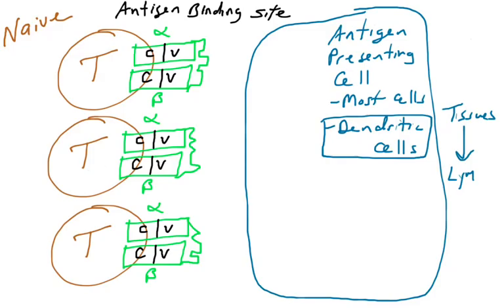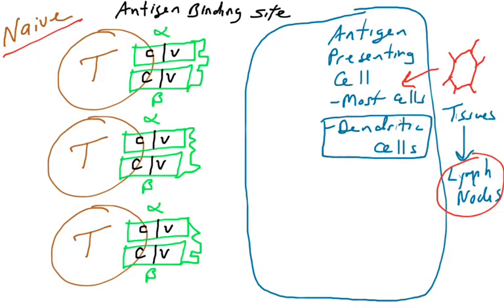Dendritic cells are very special phagocytes that live in our tissues and are migratory. They can pick things up from the tissues, travel to the lymph nodes where naive T cells are circulating looking for something to bind. Dendritic cells are great at picking up pathogens — viruses and bacteria. As phagocytes, they can phagocytose viruses or bacteria covered in complement. They can also become infected by viruses themselves, and they carry the infection to the lymph node to show it to naive T cells.